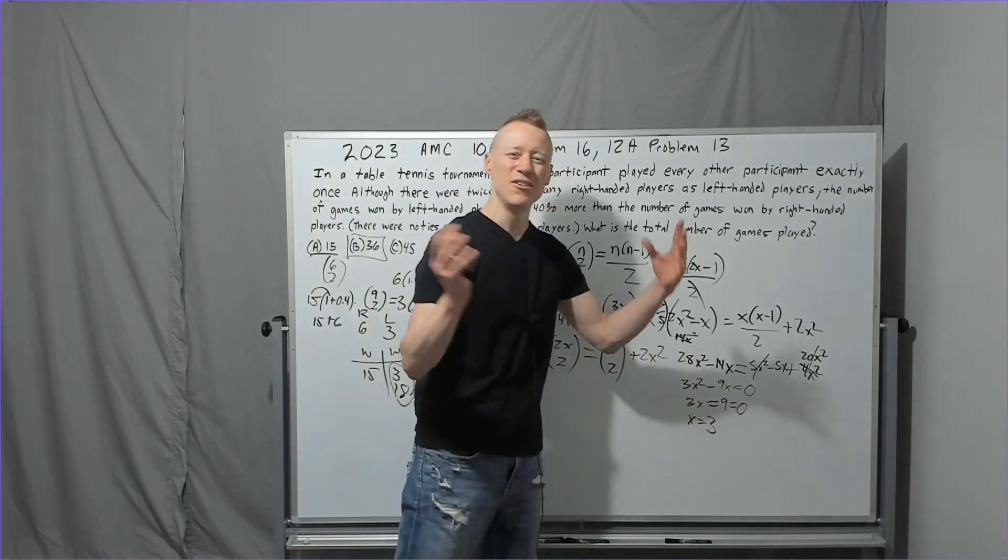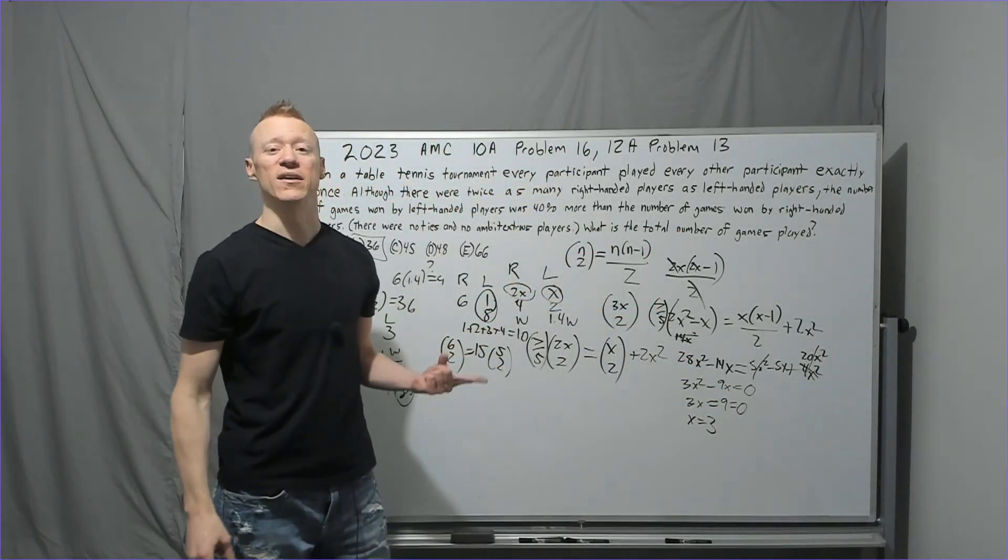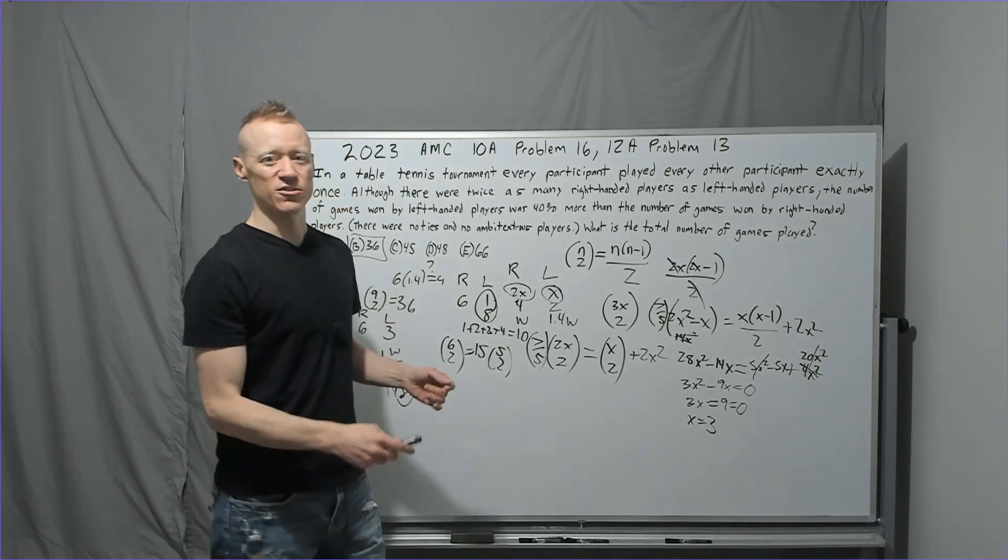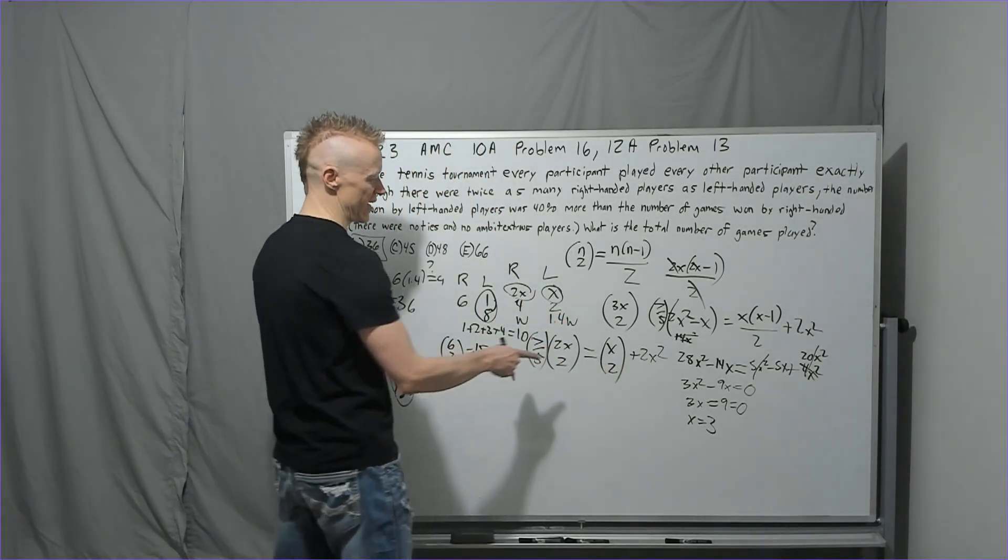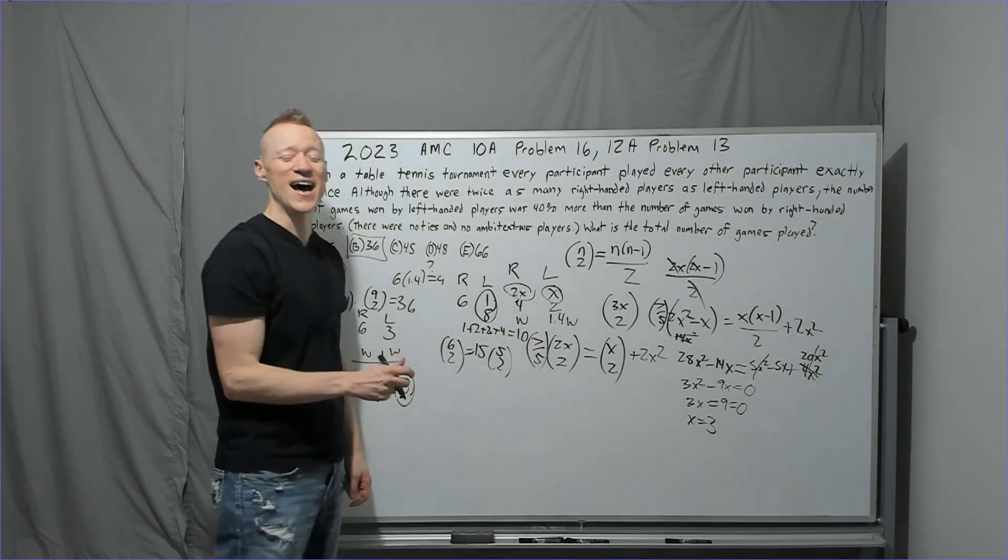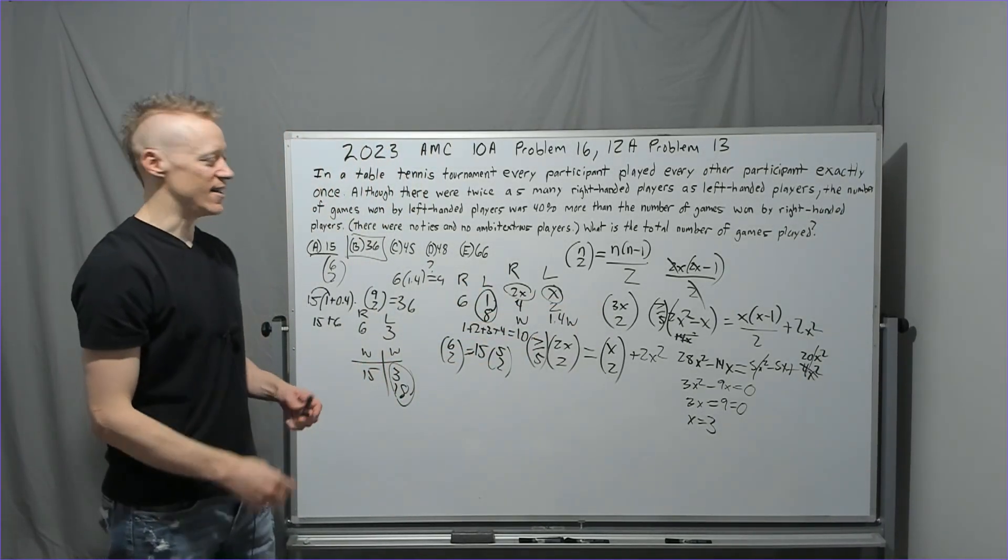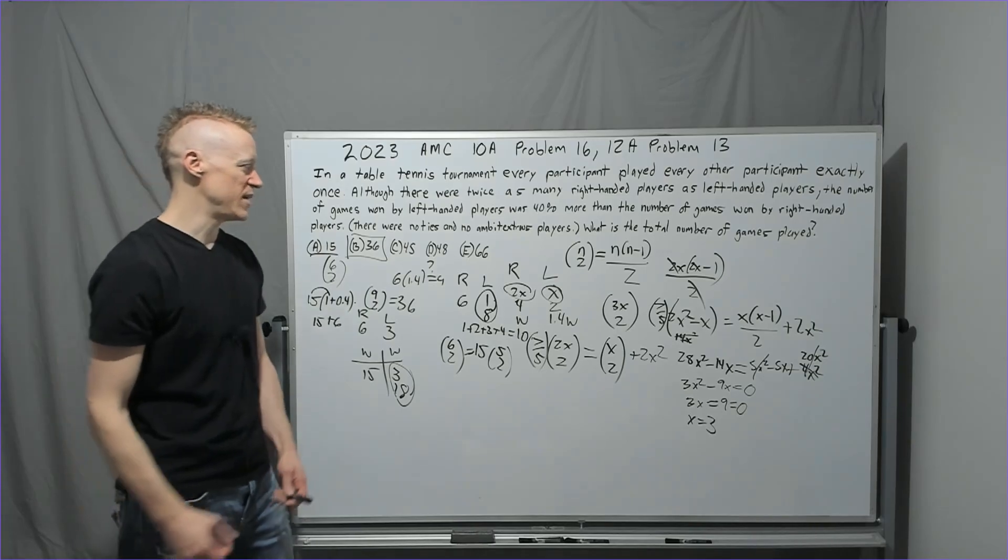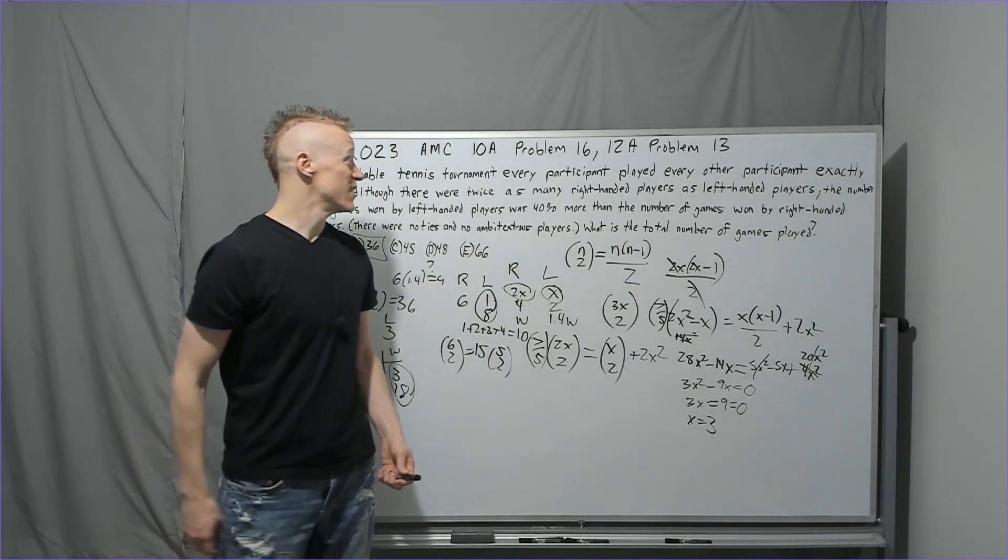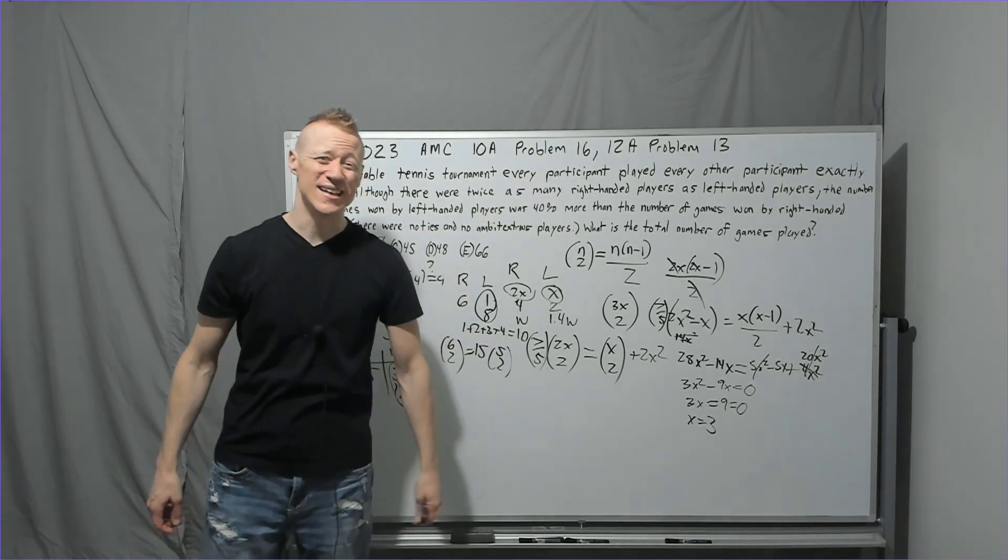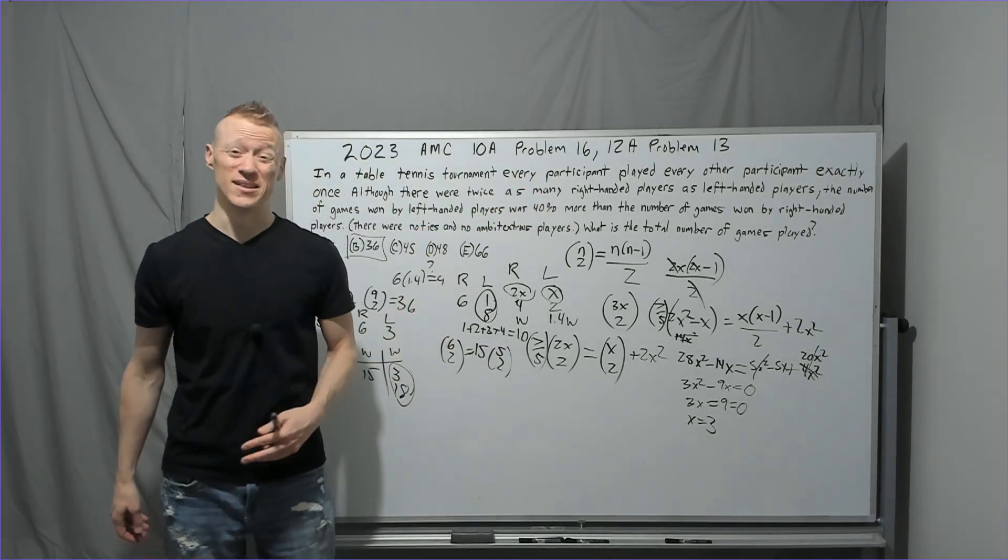So if I take x equals 3 and I plug it in, what is it? 9 choose 2. And 9 choose 2, of course, being 36, 9 times 8 over 2, 36. Let's get to the next problem. We'll do 17. And you're going to see it's actually really, really easy.